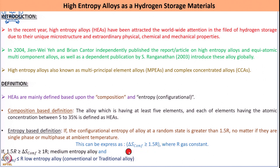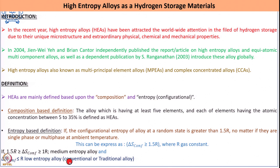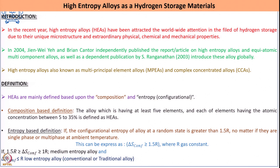If the configurational entropy lies in a range of 1R to 1.5R, then the alloys are known as medium entropy alloys. When this value is less than or equal to R, the alloys are low entropy alloys — the conventional or traditional alloys.